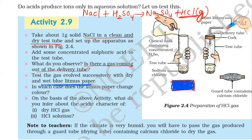With wet litmus paper, this HCl will change the color. There will be a dry litmus paper and a wet litmus paper — both are blue — and we will pass the HCl gas from both. The wet litmus paper will change color, but the dry litmus paper will not change color.